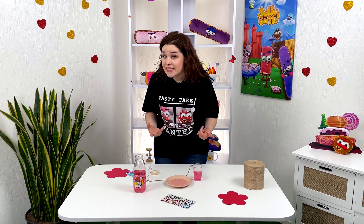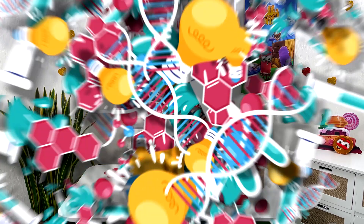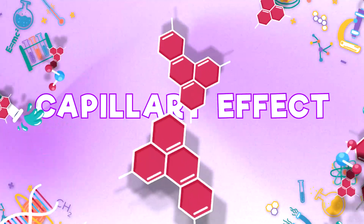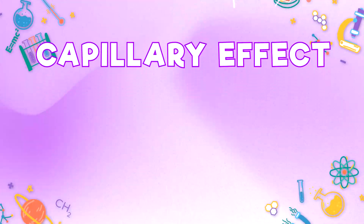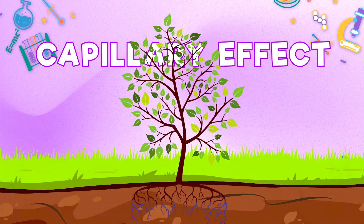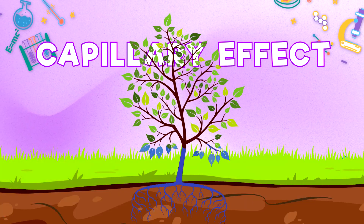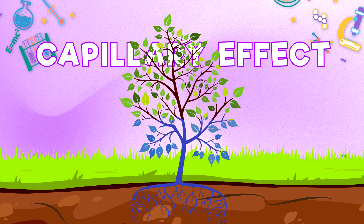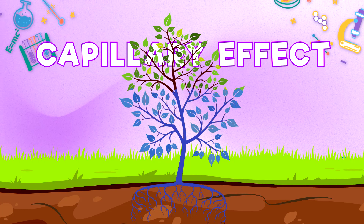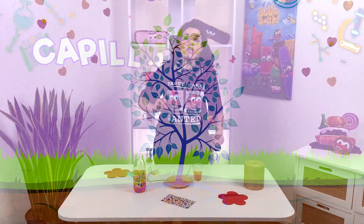Plants obtain water by capillary action — they absorb liquid with their roots from the ground, and thanks to small gaps inside the trunk, it delivers right up to the leaves and fruits.